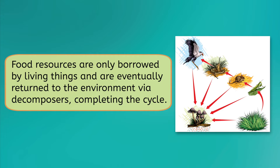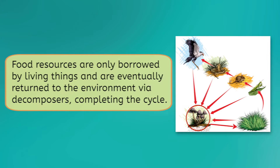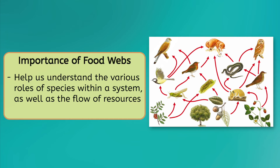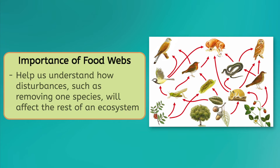Keep in mind, however, that a food web does not stop at the top consumer. Food resources are only borrowed by living things, and are eventually returned to the environment via decomposers, completing the cycle. Both food chains and food webs are important because they provide valuable insights into the complex relationships between different species in an ecosystem. This can help us better understand the various roles of species within a system, as well as the flow of resources. Additionally, by using a visual model, we can better understand how disturbances, such as removing one species, will affect the rest of the ecosystem.